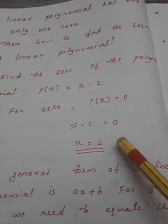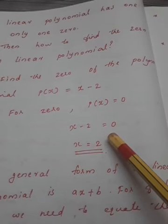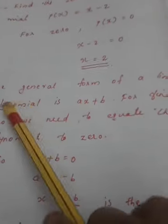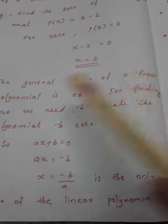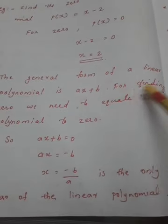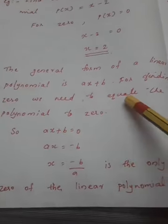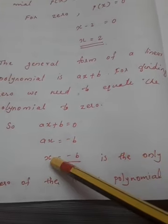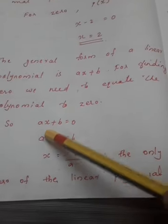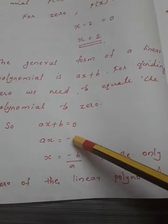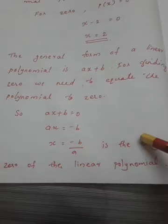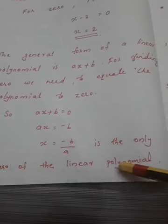Now how do we know a linear polynomial has one and only one zero? We can check using the general form of a linear polynomial, which is ax plus b. For finding the zero, we equate the polynomial to zero: ax plus b equals zero. Then ax equals negative b.